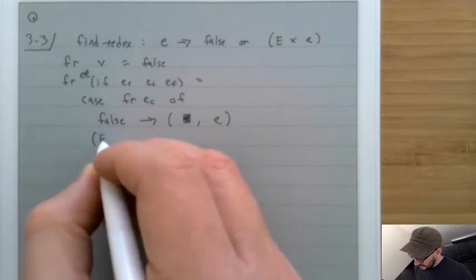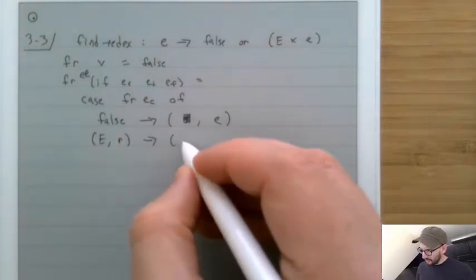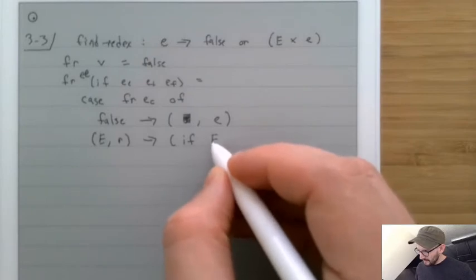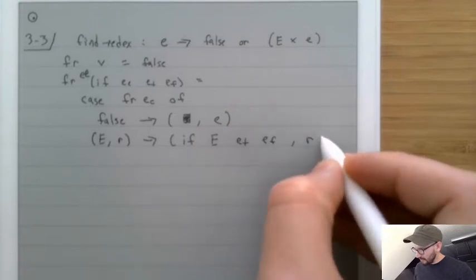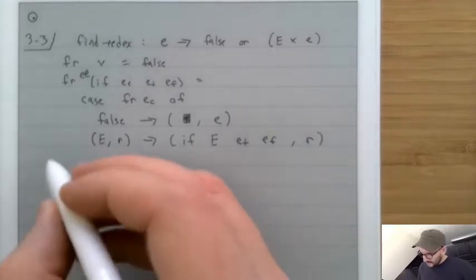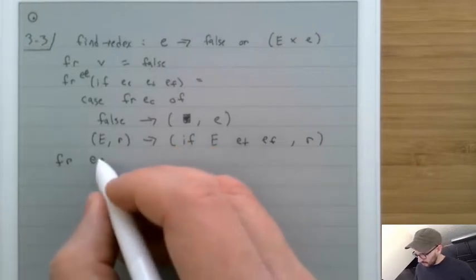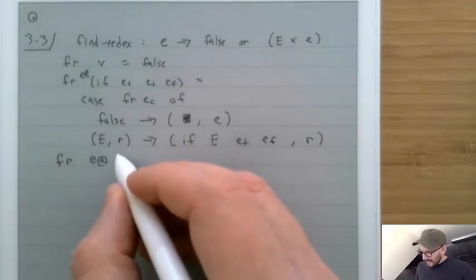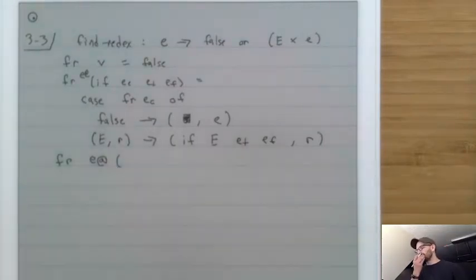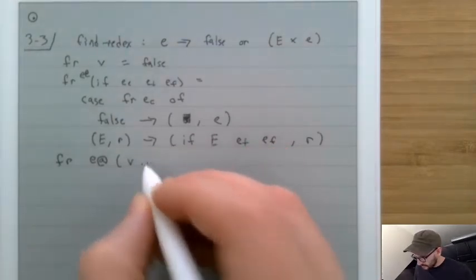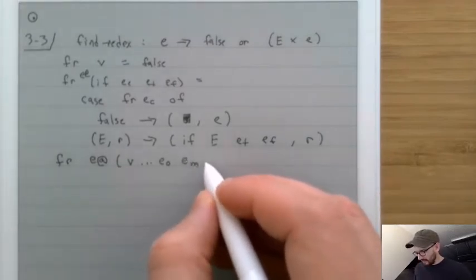Otherwise, if fr(ec) returns a pair of evaluation context E and reducible expression r, we return 'if E et ef' as the context, and r as the redex. Next, for an application fr called with a sequence of values and then a first expression e0 followed by more expressions em...